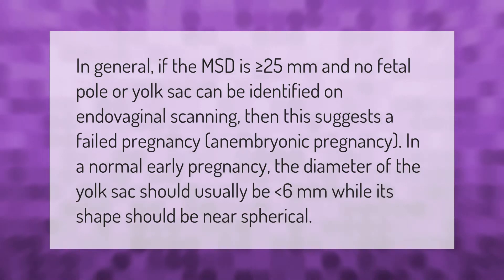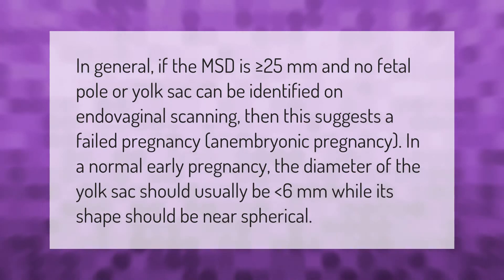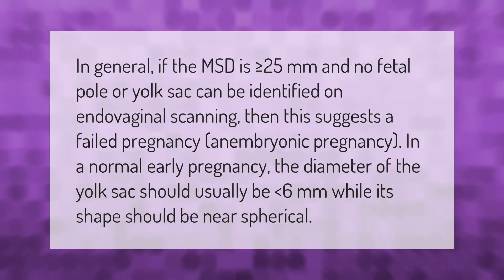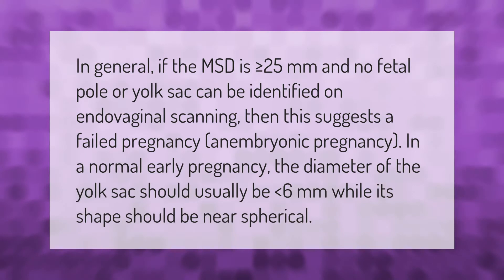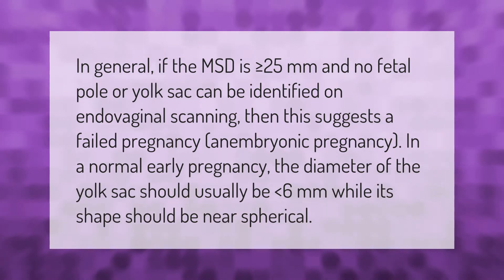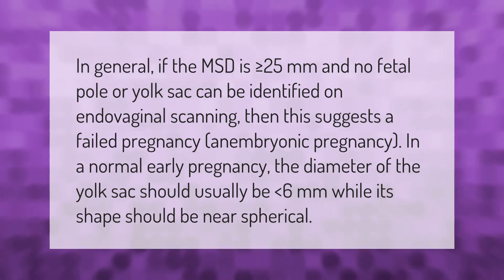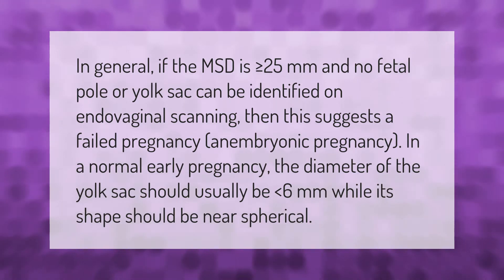In general, if the MSD is greater than or equal to 25 millimeters and no fetal pole or yolk sac can be identified on endovaginal scanning, then this suggests a failed pregnancy or embryonic pregnancy. In a normal early pregnancy, the diameter of the yolk sac should usually be less than six millimeters, while its shape should be near spherical.